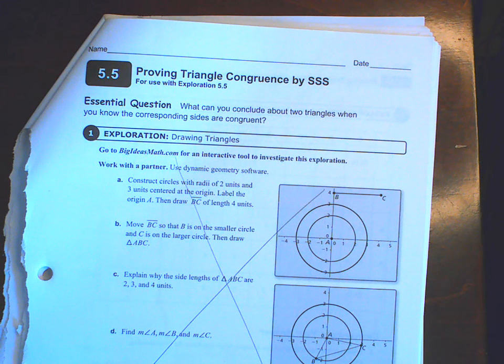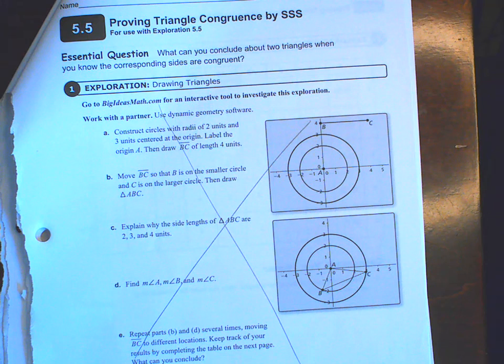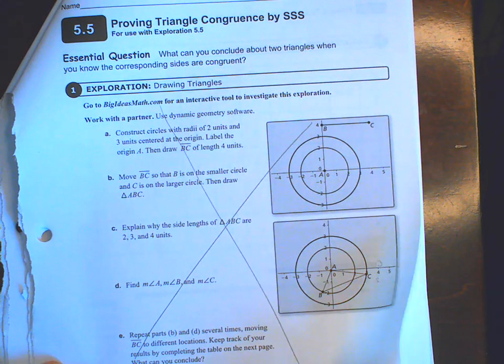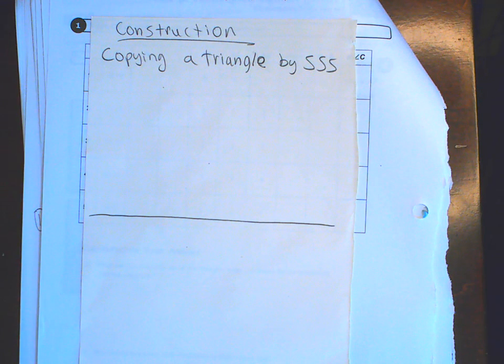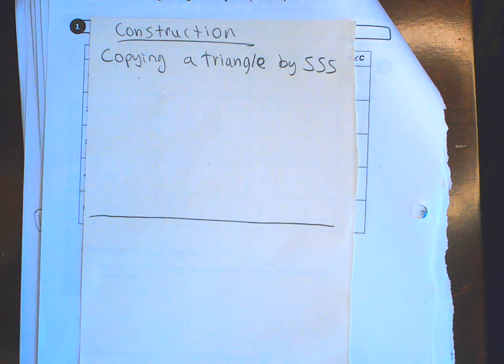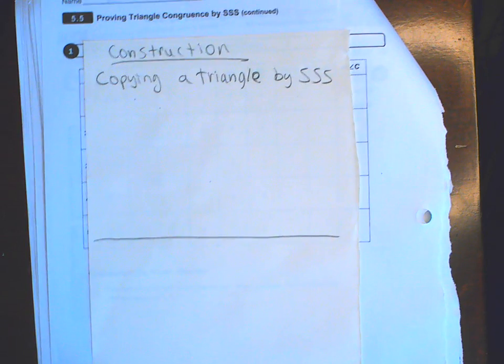Welcome to lesson 5.5: proving triangle congruence by side side side. First, on page 143, cross off that page — you do not need it. Then turn to page 144 and glue a half sheet of paper with the word 'construction.' We are going to copy a triangle using the side side side method. Once you're ready, go ahead and continue the video.